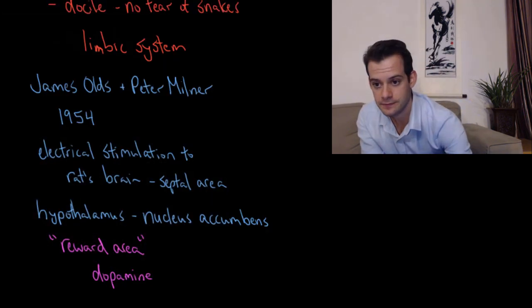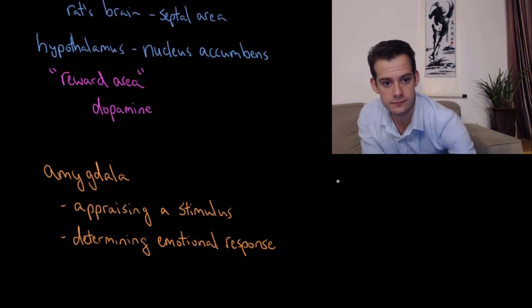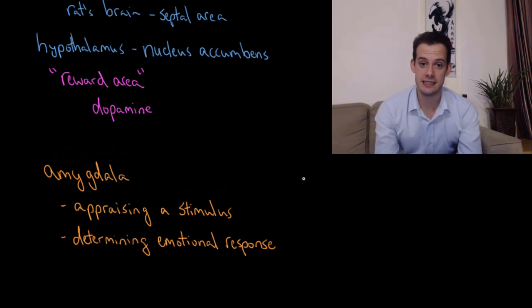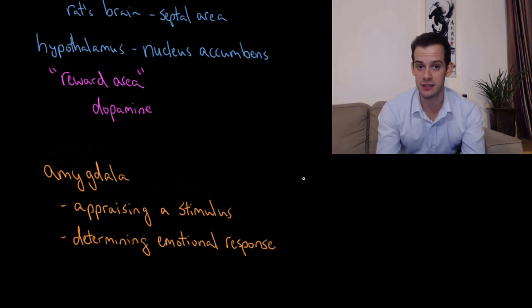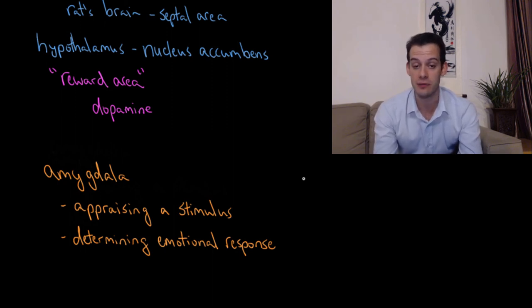The role of the amygdala seems to be that it appraises a stimulus. It helps us to determine what sort of emotional response should I have to this stimulus. So if it's a snake then you think okay I should be afraid of this snake. I should have the response of fear. But if your amygdala has been damaged like it was in Kluver and Busey's monkeys, then you're no longer able to have that appraisal process working correctly. So you're not able to determine whether something is a threat or not. A researcher handling one of the monkeys, the monkey doesn't feel threatened by this or when seeing a snake doesn't have the emotional response that it would normally have. And that's because of damage to the amygdalae.